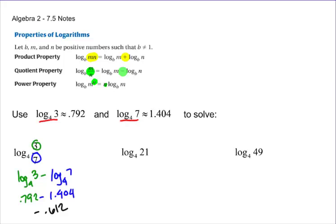With log base four of 21, what we really need to see is that we've got a log base four of three times seven. Now we can go back up here to our product property, and I'm going to have log base four of three plus log base four of seven.